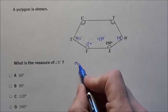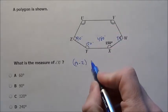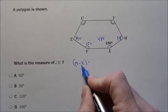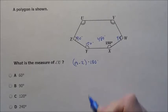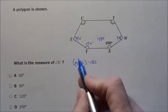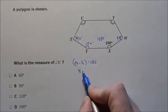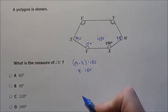Remember the formula to figure out the sum of all the angles inside a shape is the number of sides take away 2 times 180 degrees. So we said 6 sides, 6 minus 2 is going to be 4 times 180 degrees.